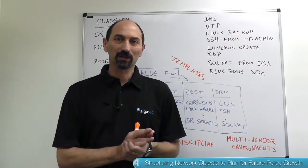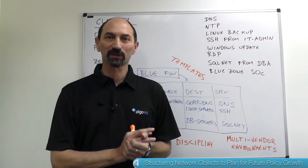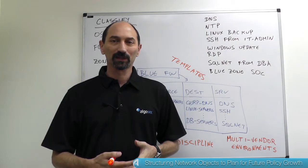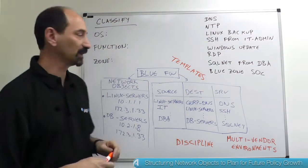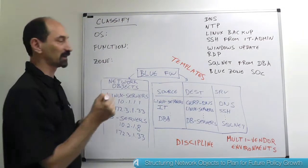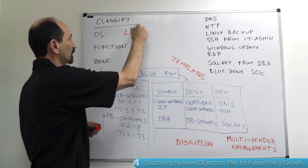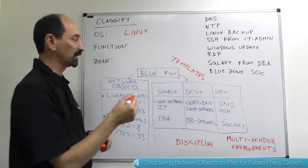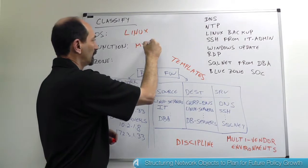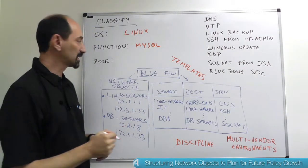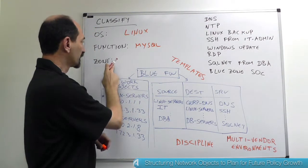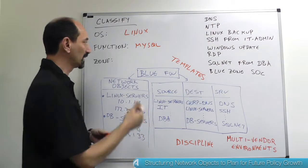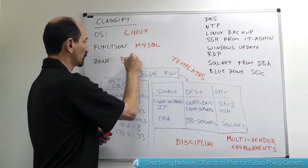Imagine that you have servers in your data center. You could probably categorize your servers according to multiple criteria, such as the operating system that they're using — maybe it's a Linux server — the function that they're playing, so maybe it's a MySQL database, the zone, the network segment that the server is going to be located in, so maybe it's in the blue zone.